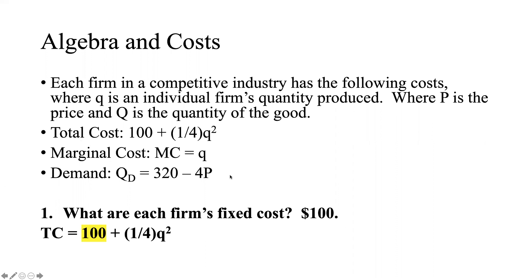The first question is: what are each firm's fixed costs? Looking at our total cost curve, each firm's fixed cost is $100. The fixed cost is just the unchanging cost.